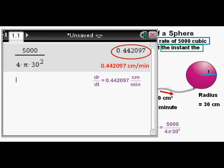So our answer is dr/dt or the rate of change of the radius over time is 0.442097 centimeters per minute, which we box in as our correct answer.